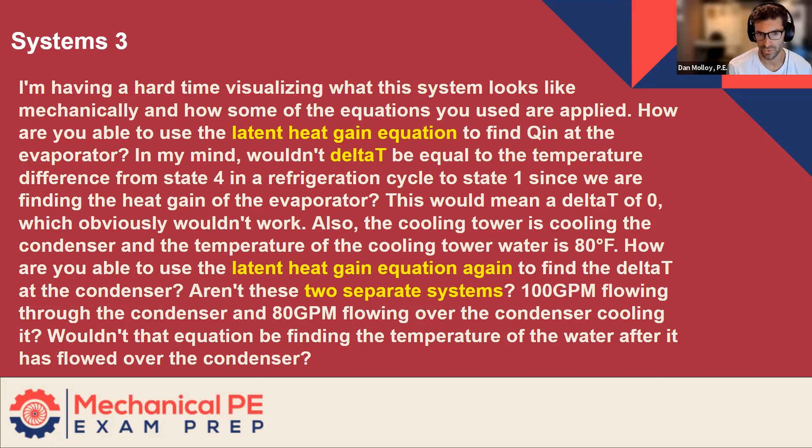Also, the cooling tower is cooling the condenser and the temperature of the cooling tower water is 80. How are you able to use the latent heat gain equation again? I think you mean sensible heat gain again, to find the delta T at the condenser. Aren't these two separate systems? Actually, these are three separate systems.